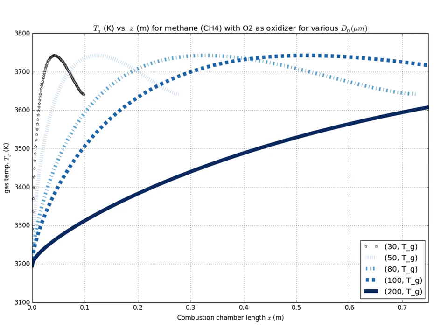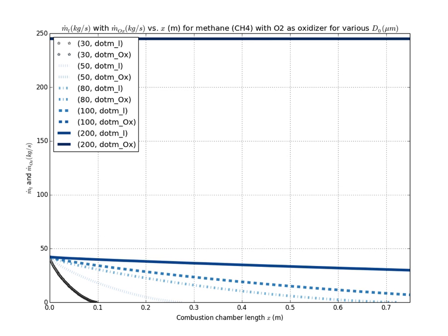We have a plot of Vd versus x and see that for smaller D_0 values — 30 and 50 microns — the droplets are accelerated faster and to larger magnitudes of droplet speed early on in the combustion chamber compared to bigger droplets.